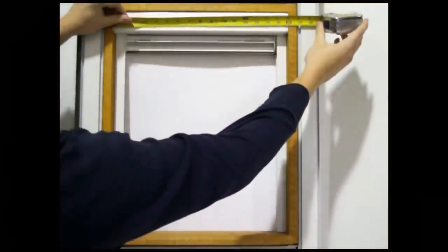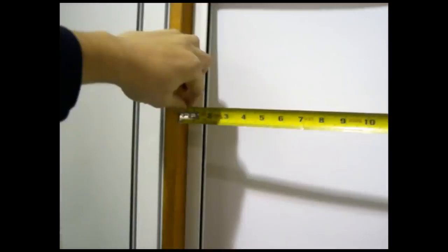Because some windows can be out of square, it is best to get a few measurements: the top, the middle, and the bottom.